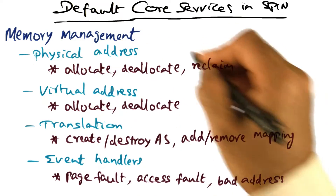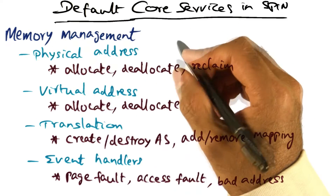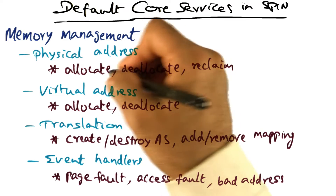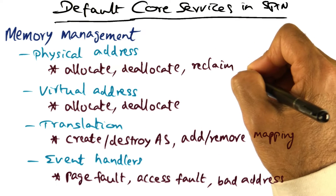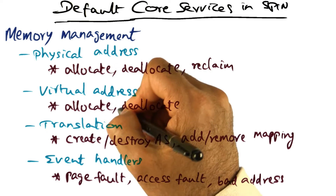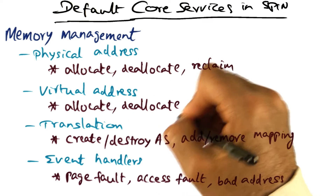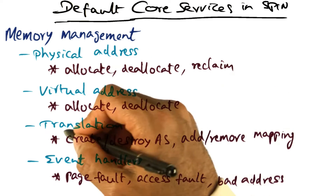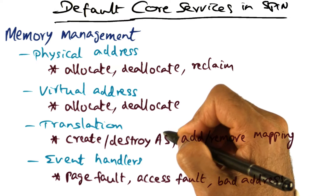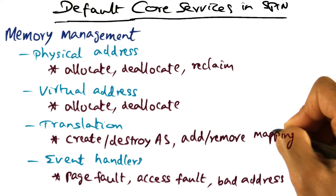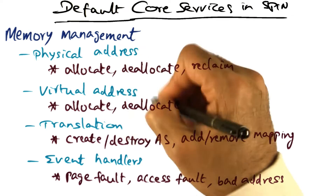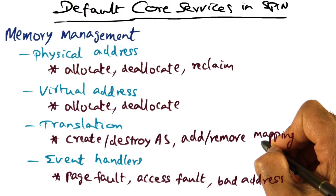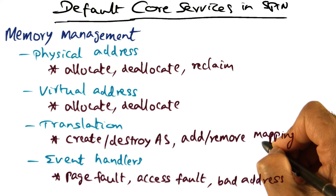The interface functions shown here for memory management are simply header files provided by Spin. For example, allocating a page frame, deallocating a page frame, reclaiming a page frame. Similarly, allocating a virtual page or deallocating a virtual page, which might be used for dynamic memory allocation. Translating has to do with creating and destroying address spaces, adding or removing mapping between virtual pages and physical frames. All of those are interface functions that are provided as header files by Spin.